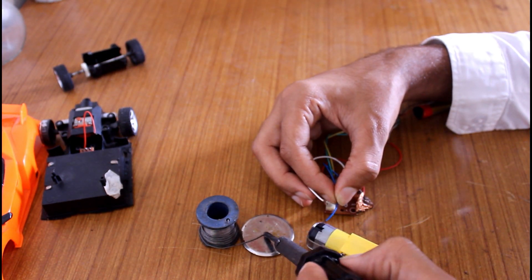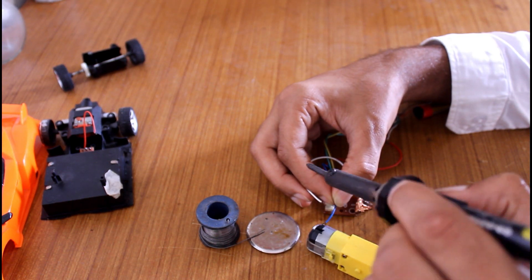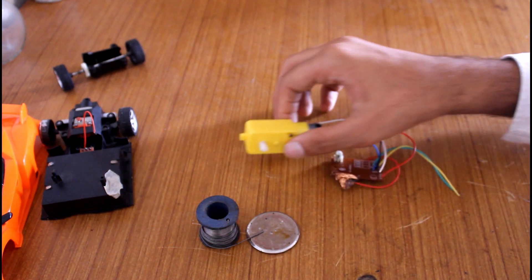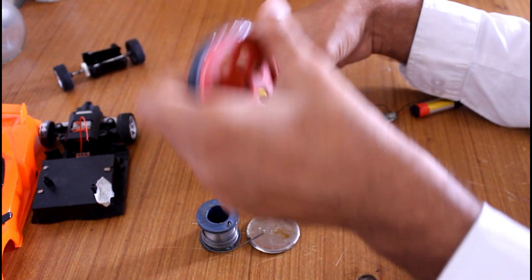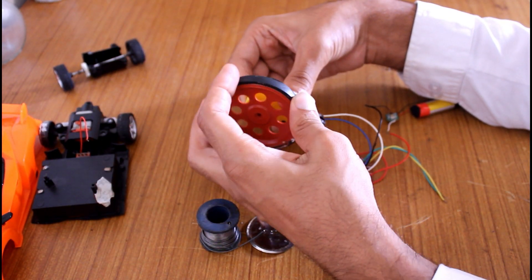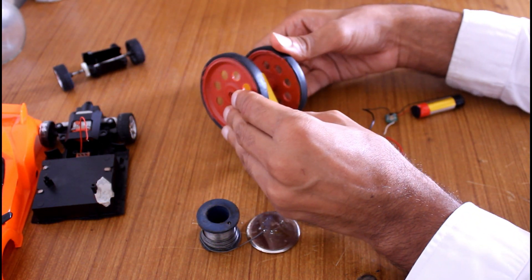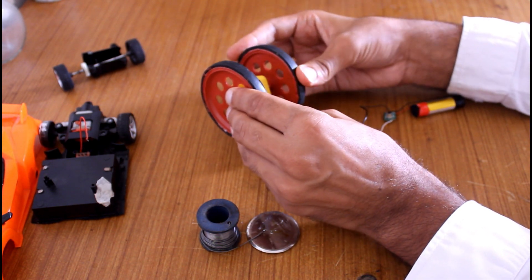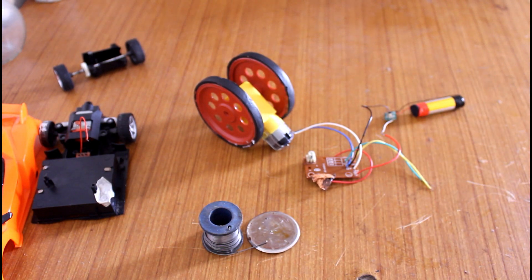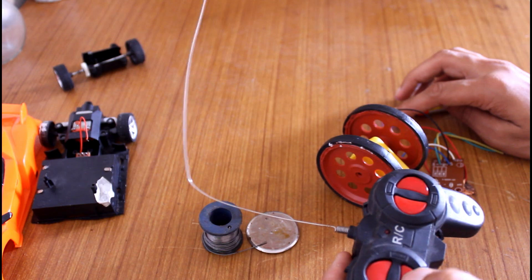I will solder this gearbox mechanism with the receiver circuit to drag the cannon. And these beautiful wheels give the shape of the cannon now. Let's see if it is working or not. Okay, it's working.